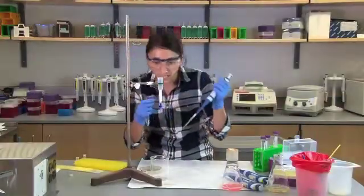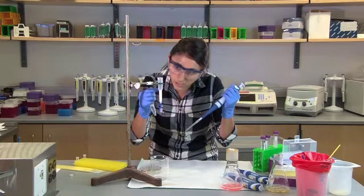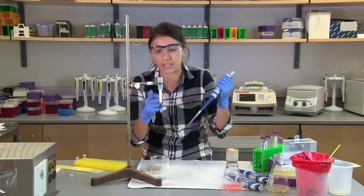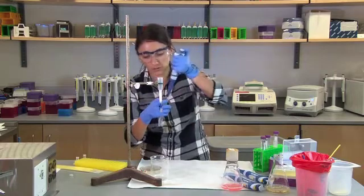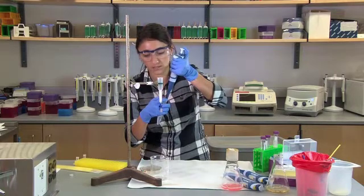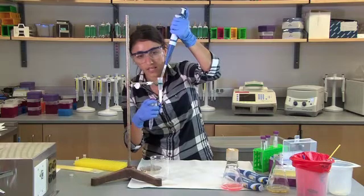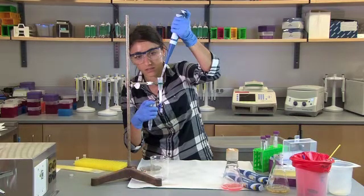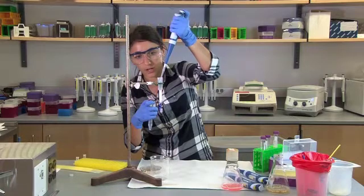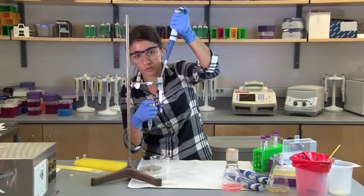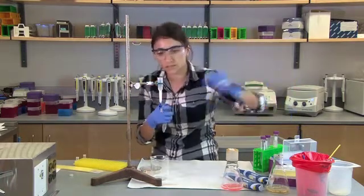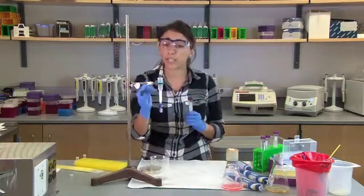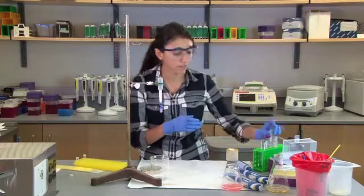So we can see that the pink is starting to move onto the column, but it's still hanging out at the top. So now I'm going to add the next buffer, which is the elution buffer, again slowly down the side so as not to disturb the resin bed. And we'll start to see the pink band move down the column.